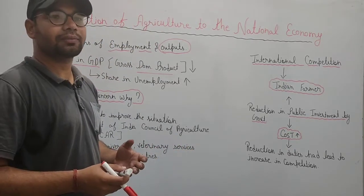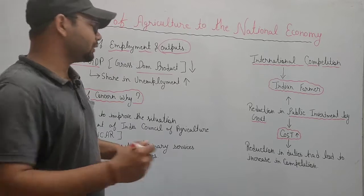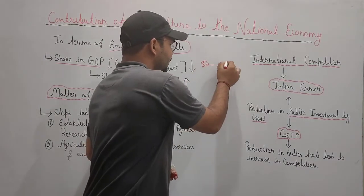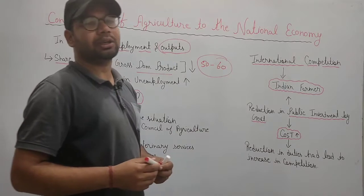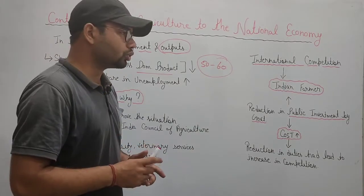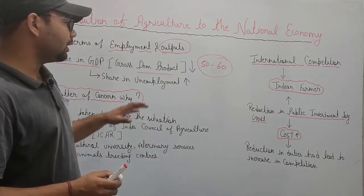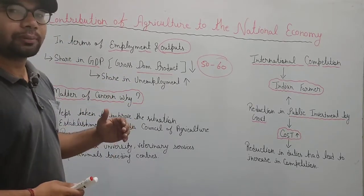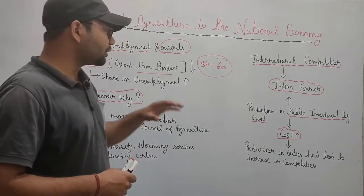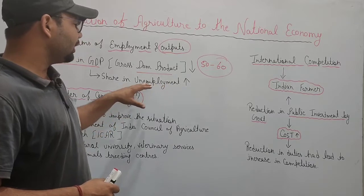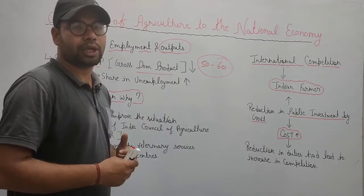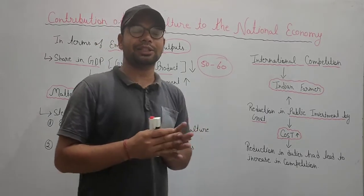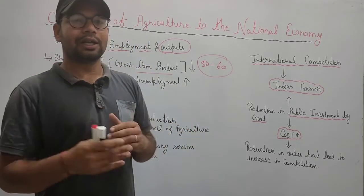The share in employment is increasing because in our country approximately 40 to 50%, or some say 50 to 60%, of people are engaged in agriculture or are agriculture-dependent. They get their employment from agriculture. But now, production is continuously decreasing, and because of this decrease in production, unemployment is increasing.